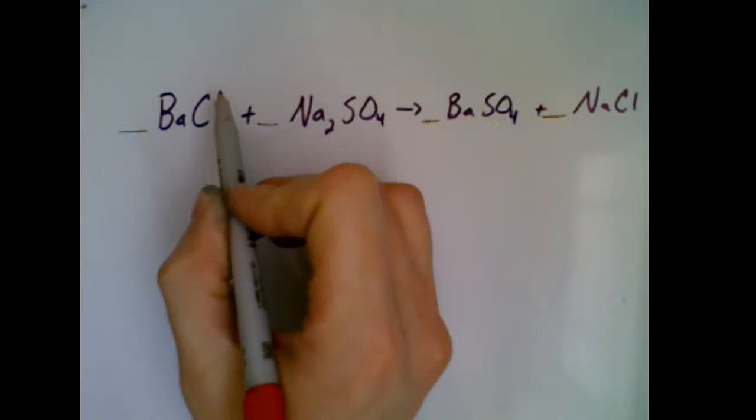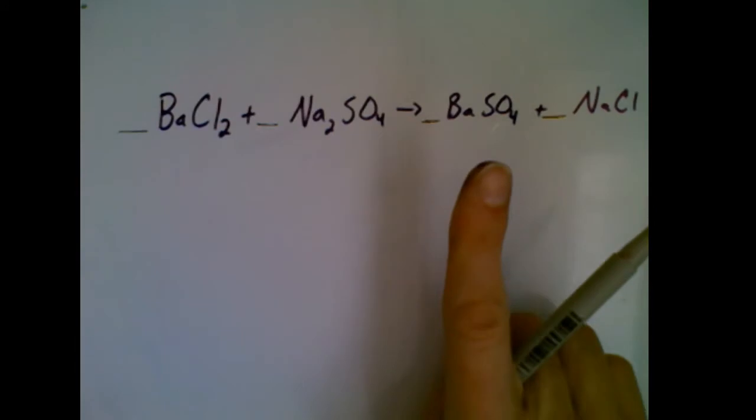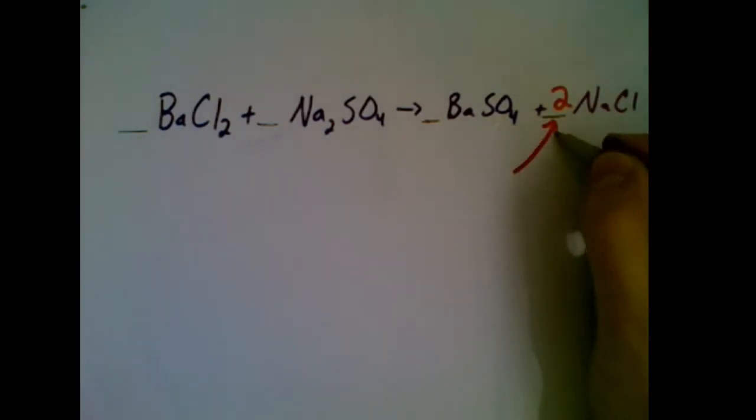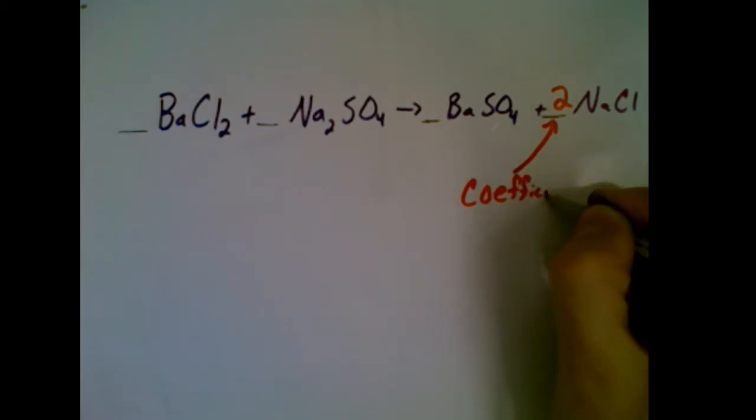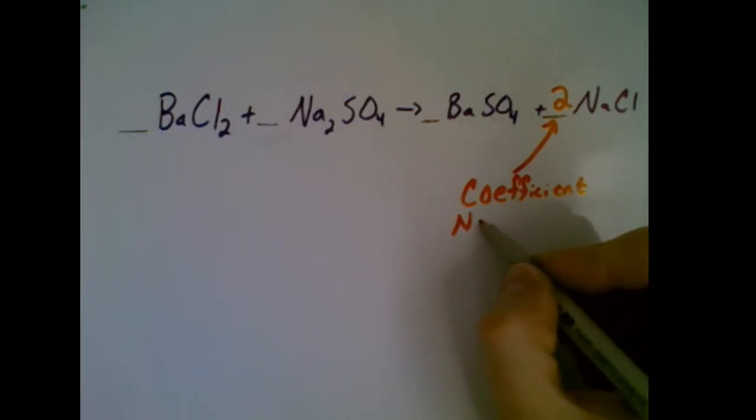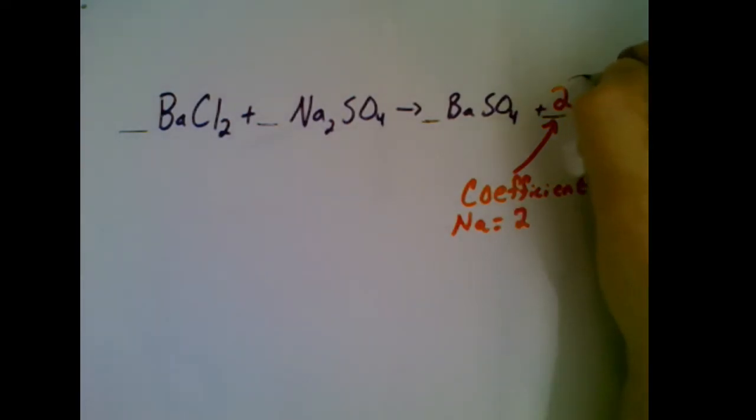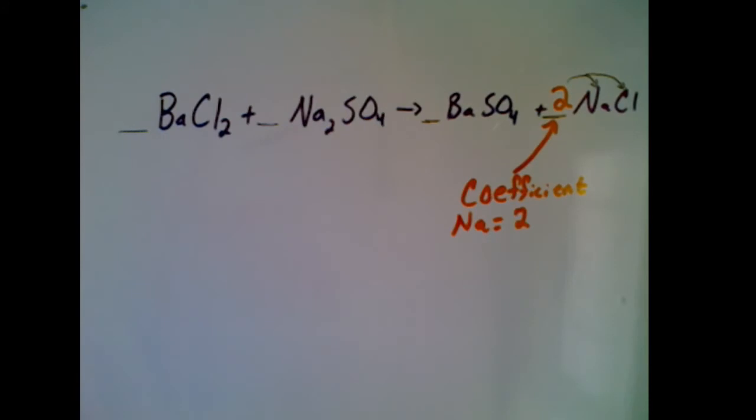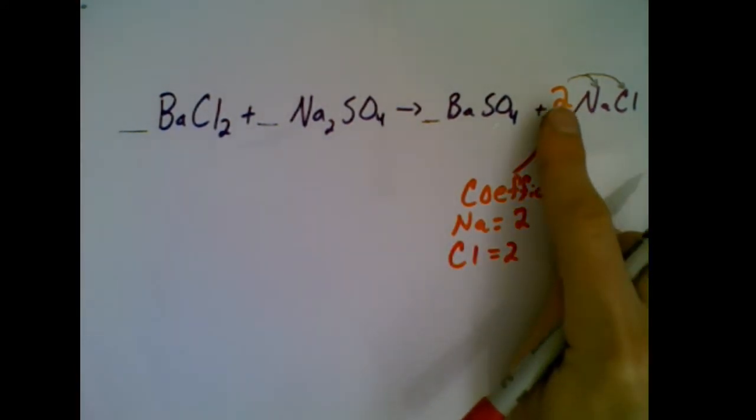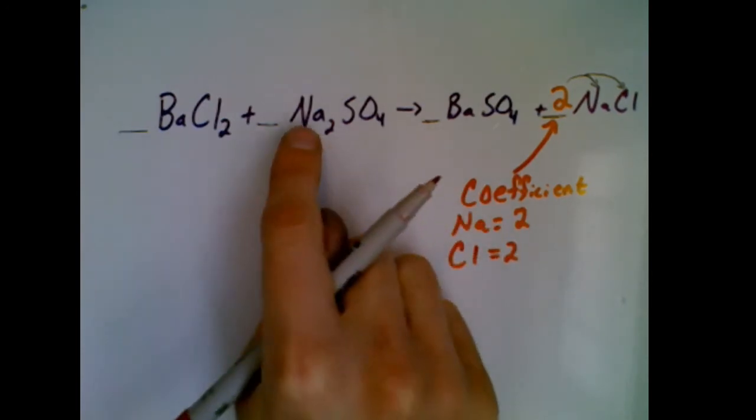I have Cl, but I have two of them. On the other side of the arrow, I have Cl, but I only have one of them. So I can add a number in the front, which we call a coefficient. I'm going to add a coefficient of two. This now tells me on this side of the equation there is now two sodiums because this two applies to both the sodium and the chlorine. I've given myself two chlorines, which is what I needed. But in doing so, I've given myself two sodiums. Let's check and see if that's balanced. Na, and I have two of them. That's actually balanced now.